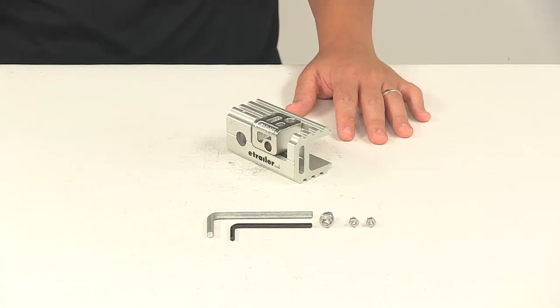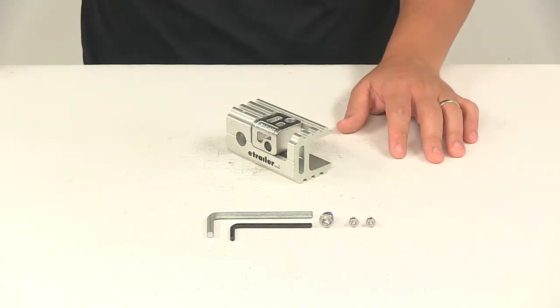For the Full Tilt Bike Racks, it fits model numbers Y02-463 or Y02-462.